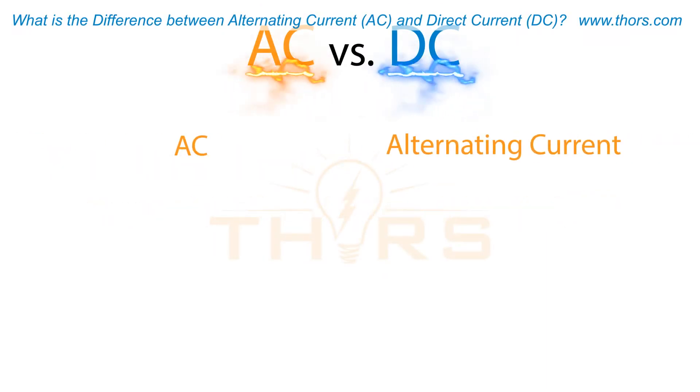AC stands for Alternating Current, and DC stands for Direct Current.